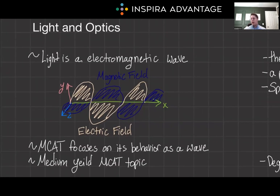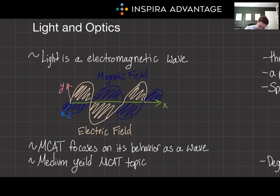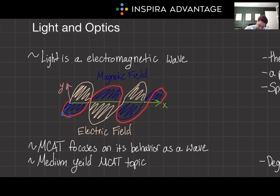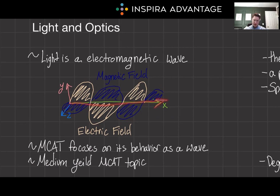Let's start with a quick primer on the light and optics physics you'll need to understand this. Light is an electromagnetic wave, and when we discuss optics — especially in the context of the MCAT — we focus on its behavior as a wave. The wave nature of light is essential for understanding phenomena like optical activity. We call it an electromagnetic wave because it's made up of a magnetic field, shown here in blue, and an electric field, shown here in yellow. As you can see, they operate on two distinct axes, and the wave propagates in a third axis.